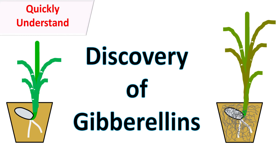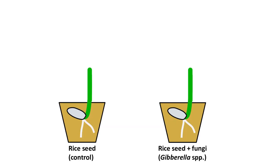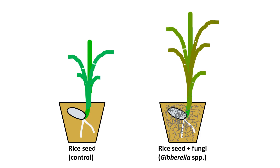Gibberellins were discovered by Japanese scientists in the year 1920 when they were trying to study seeds of the rice plants. During the study, they found that when the seeds of the rice were infected by a fungus, the plants germinated from such seedlings became very tall, pale and gave less yield.